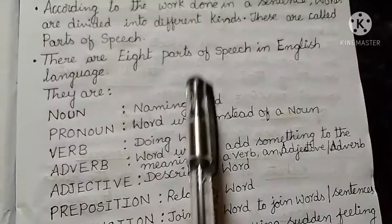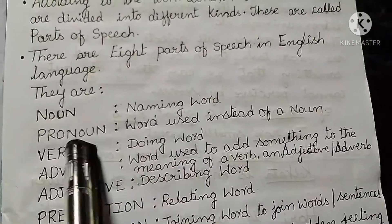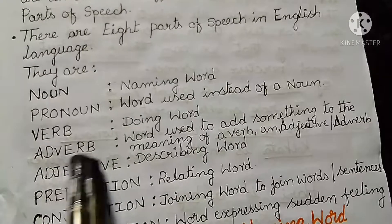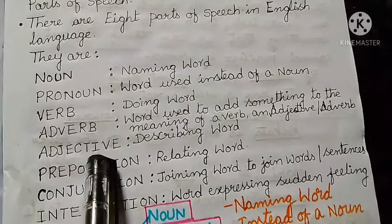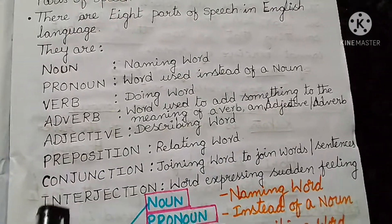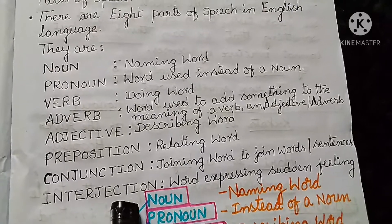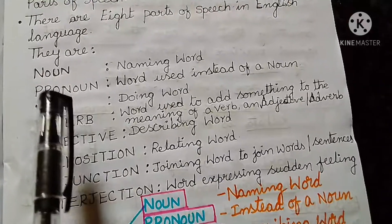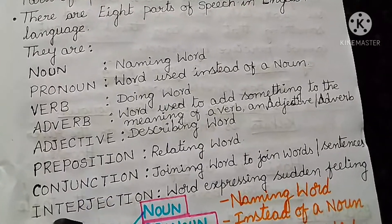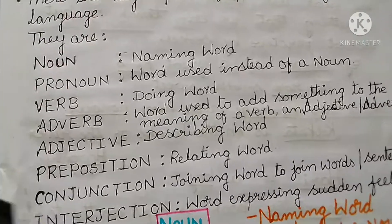The 8 parts of speech in English language are: Noun, Pronoun, Verb, Adverb, Adjective, Preposition, Conjunction, and Interjection. Now let us know briefly about these 8 parts of speech in a word or a sentence.